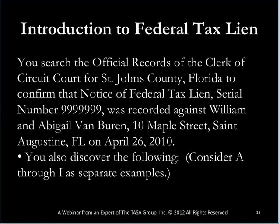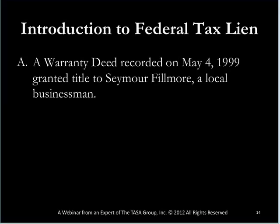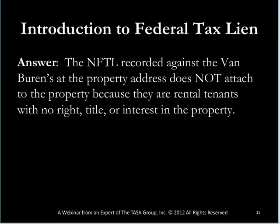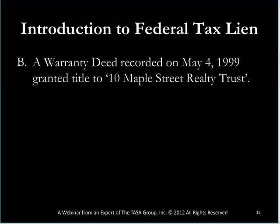Example A: In addition to the federal tax lien found, we found a warranty deed for the property — and the owner is Seymour Fillmore, another president. Millard Fillmore was from East Aurora, New York. The question is: does the tax lien attach? The answer is no, because the Van Burens are just tenants. They do not own the property; they have no right, title, or interest in it. Seymour Fillmore makes a very nice living renting those Florida properties to snowbirds from the north year after year.